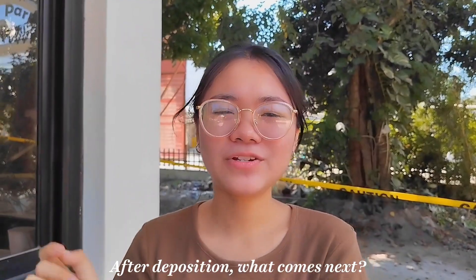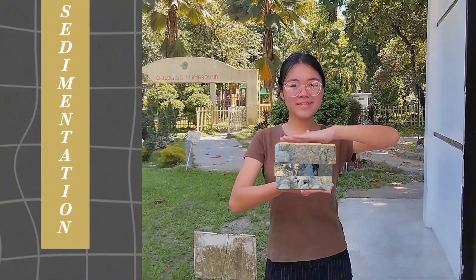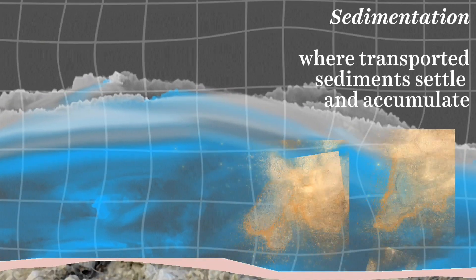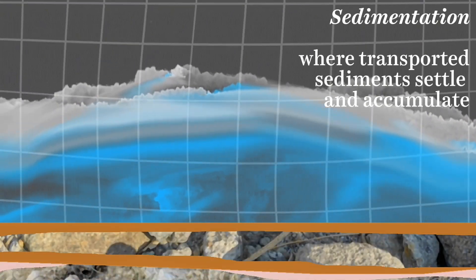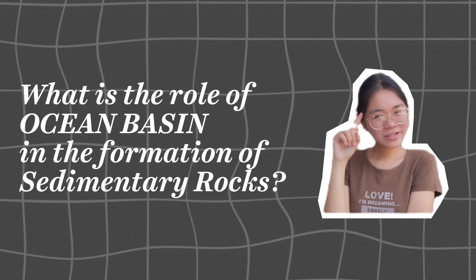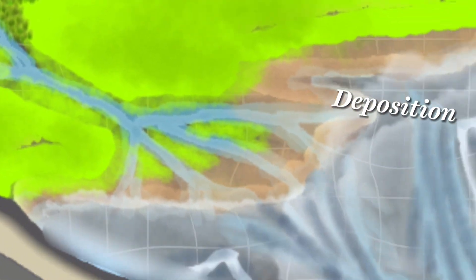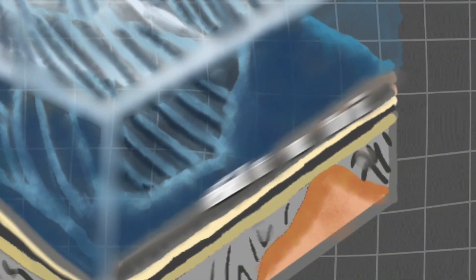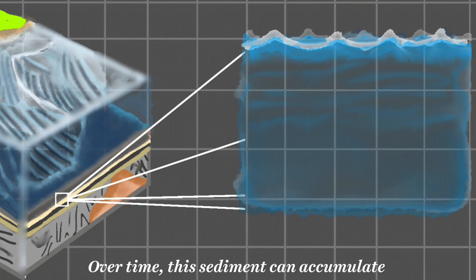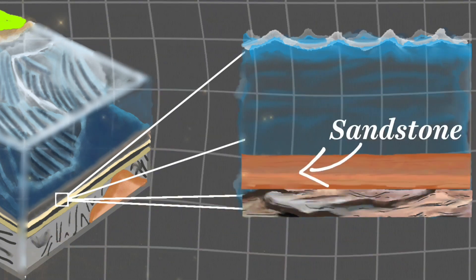After deposition, what comes next? The next process will be sedimentation. This process occurs when those transported materials carried by erosion settle and accumulate in a new location. Ocean basins play a crucial role in the formation of sedimentary rocks through sedimentation. The ocean is a vast repository for sediment, which is carried by currents and deposited on the sea floor. Over time, the sediment can accumulate and form sedimentary rocks such as shells, sandstones, and limestone.